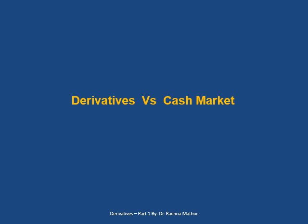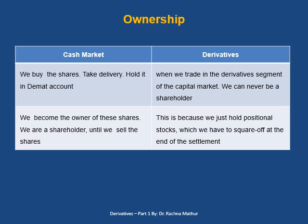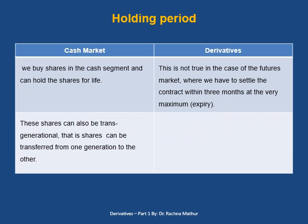To understand the derivative market more clearly, let us compare it with the cash market. On ownership: in the cash market, we buy shares, take delivery, and keep them in a DMAT account — we are called shareholders. But in derivatives, we can never be a shareholder because we just hold a position which we have to square off at the end of the settlement. On holding period: in the cash market, we can hold shares for a long time — even transgenerationally. But in derivatives, we must settle the contract within three months or at the time of expiry.